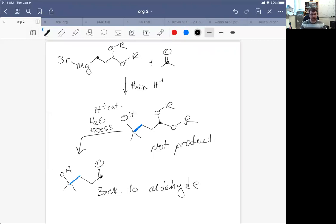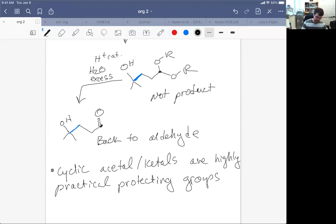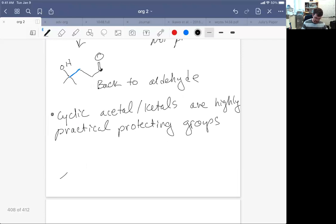Now there's all sorts of protecting groups present. The acetal and ketal is a really popular protecting group for aldehydes and ketones. Now of these, the most practical acetal or ketal to use, if you're just looking to do a protection, is the cyclic acetal and ketal. So these are highly practical protecting groups.